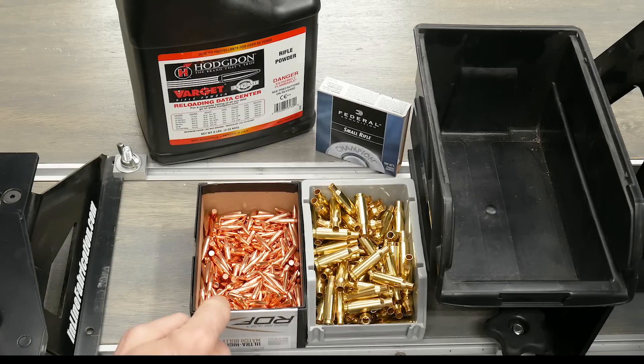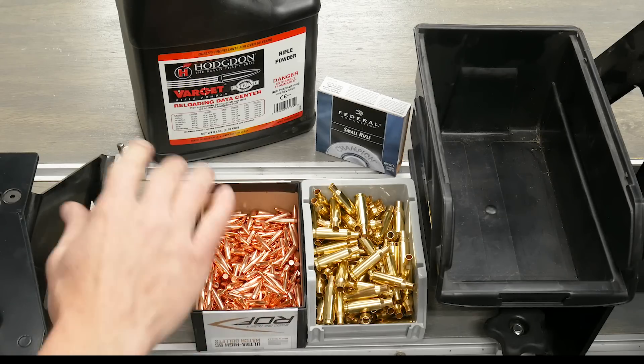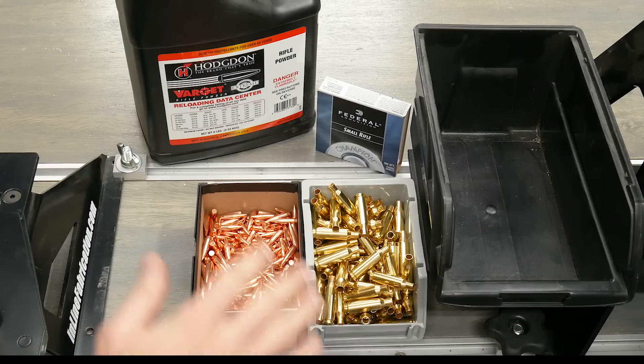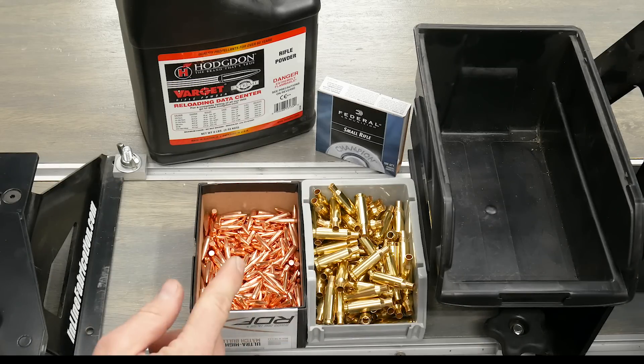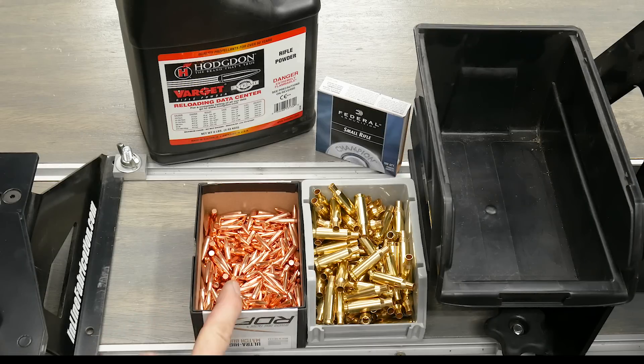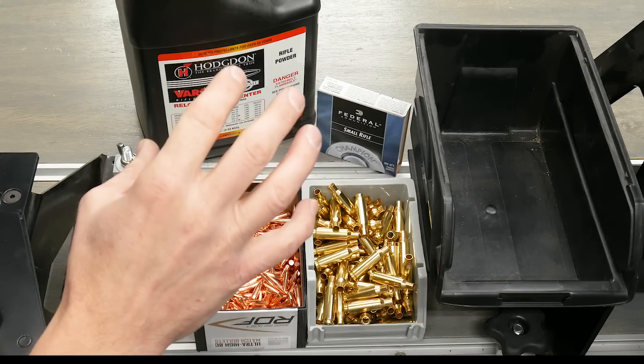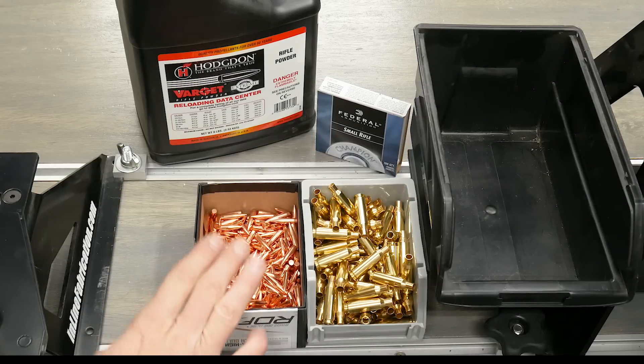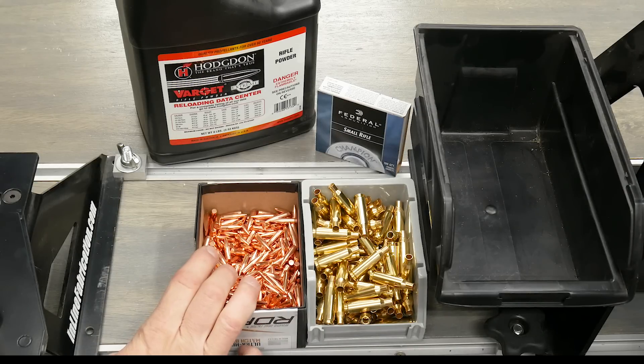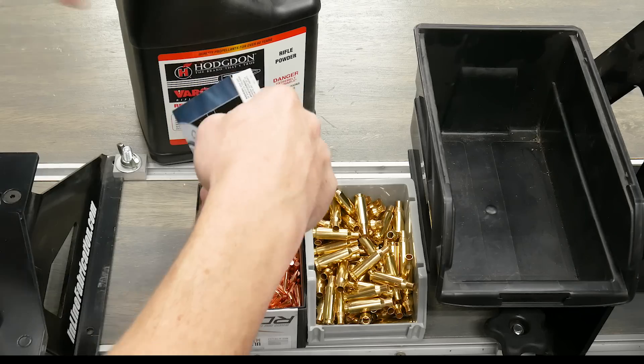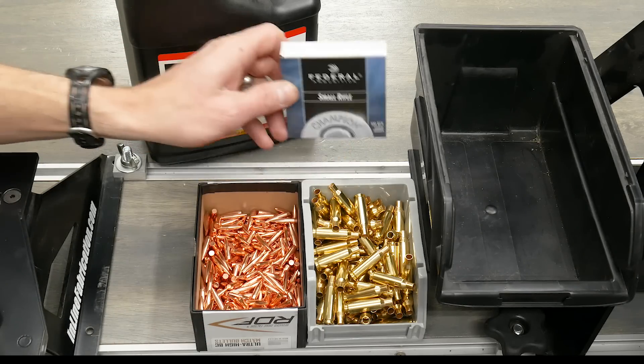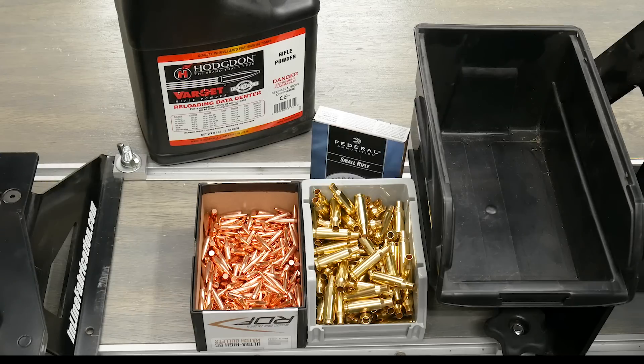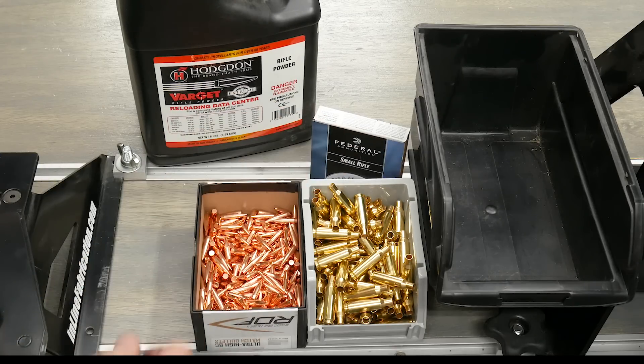I'm using 70 grain Nosler RDF bullets. These are good middle of the weight range for 224 Valkyrie bullets and they've shot really well for me in 22 Nosler. So I thought I would start with these bullets in order to get kind of a baseline load development underway and while I'm waiting for some of the heavier bullets to come in stock. And then Federal 205 Small Rifle Primers. This is a good mainstay primer that I like to use for a variety of different scenarios like 223.